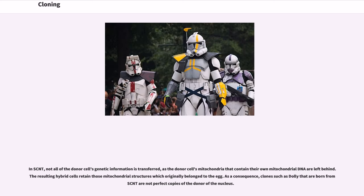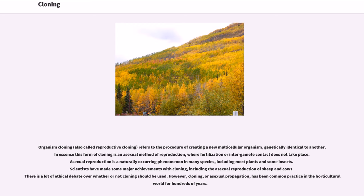In SCNT, not all of the donor cells' genetic information is transferred, as the donor cells' mitochondria — which contain their own mitochondrial DNA — are left behind. The resulting hybrid cells retain the mitochondrial structures which originally belonged to the egg. As a consequence, clones such as Dolly that are born from SCNT are not perfect copies of the donor of the nucleus. Organism cloning, also called reproductive cloning, refers to the procedure of creating a new multicellular organism genetically identical to another — essentially an asexual method of reproduction where fertilization or intergamete contact does not take place.